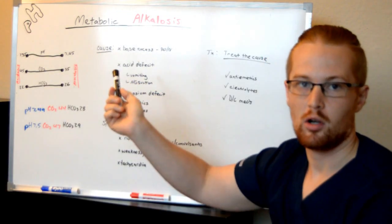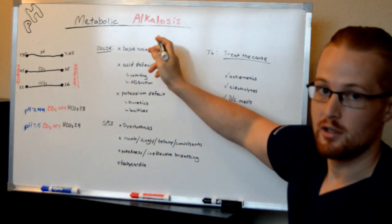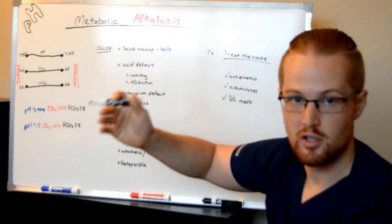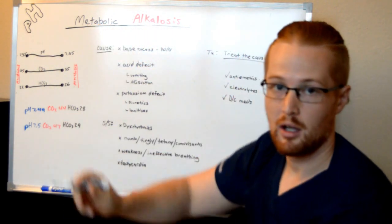Alright, let's talk about metabolic alkalosis. What we're talking about here is alkalosis, which is a high pH in the blood, the opposite of acidity. And it's due to metabolic causes.